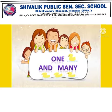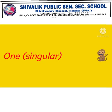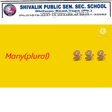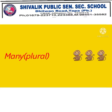One and many. One means singular — means just one person, one thing. Many means plural — means more than one person, one thing.